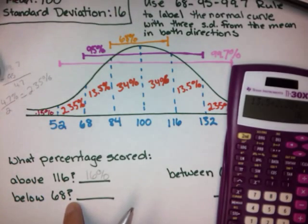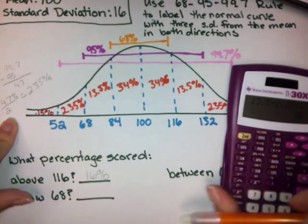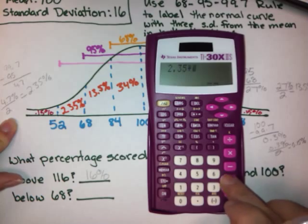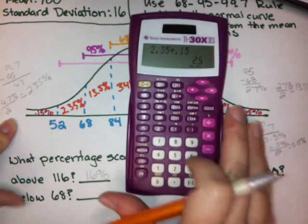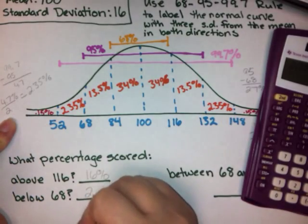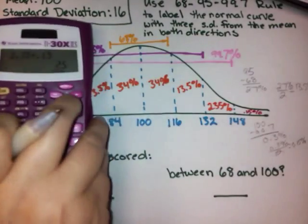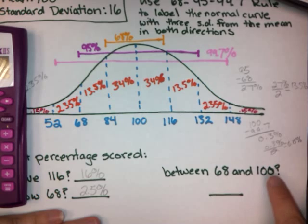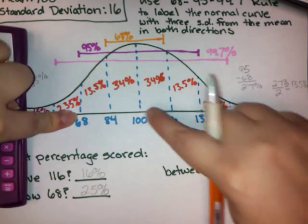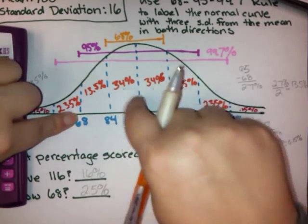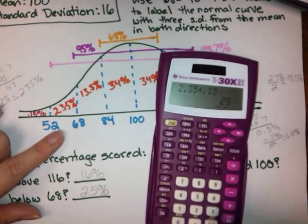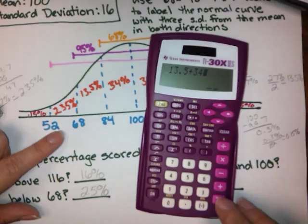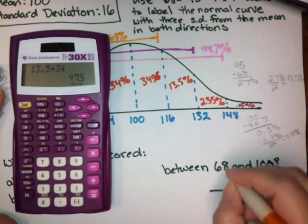What percent scored below 68? Here's 68, and we want everything below it: 2.35 plus 0.15 gives us 2.5%. Finally, how many scores fall between 68 and 100? We look at 68 and 100 and add up the percentages in between: 13.5 plus 34 gives us 47.5%.